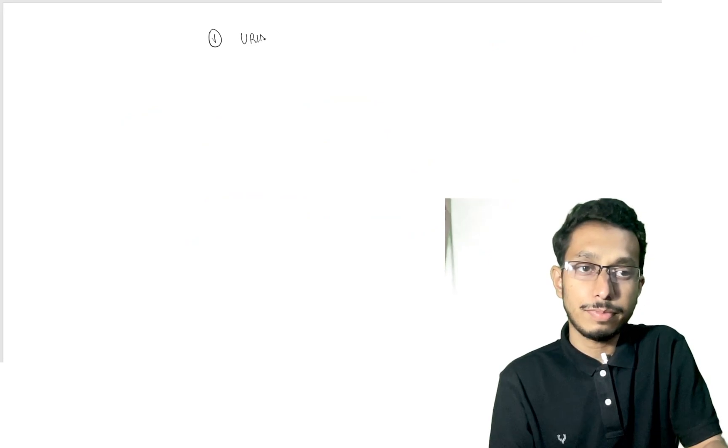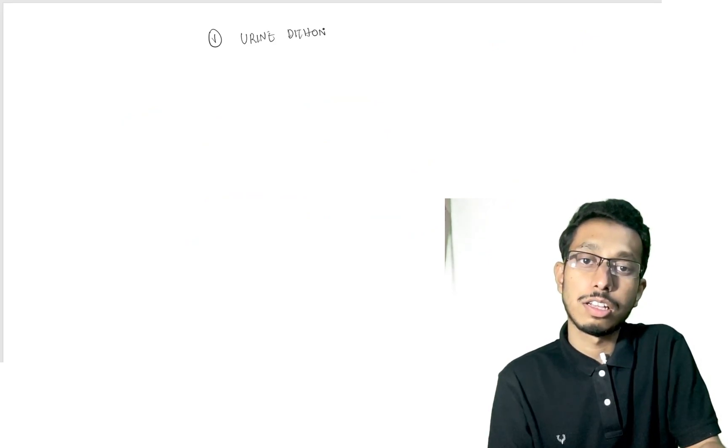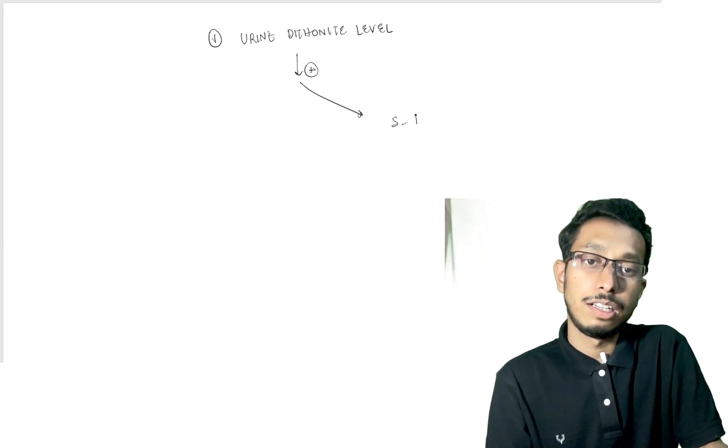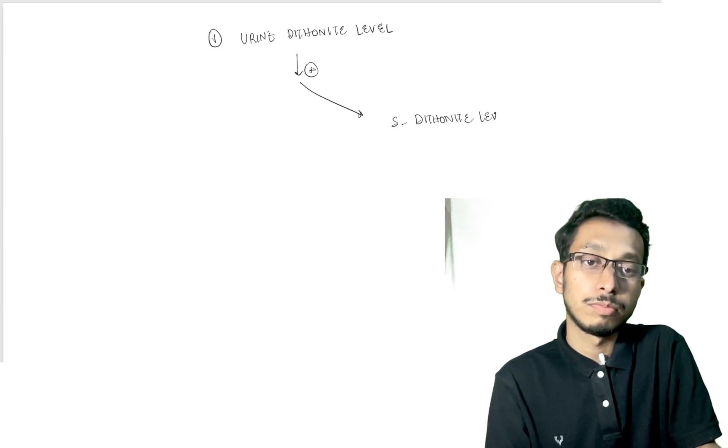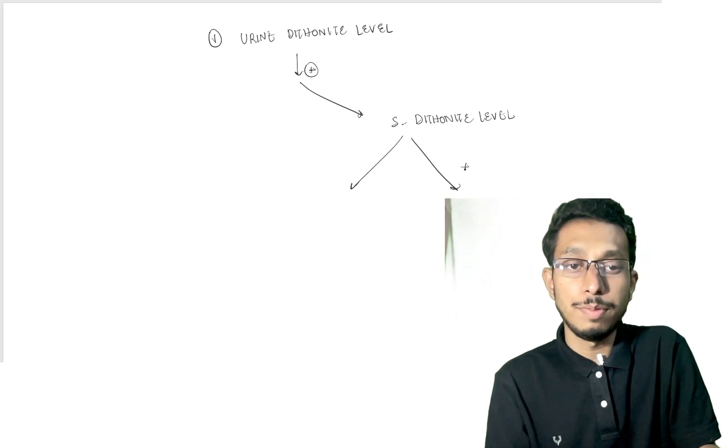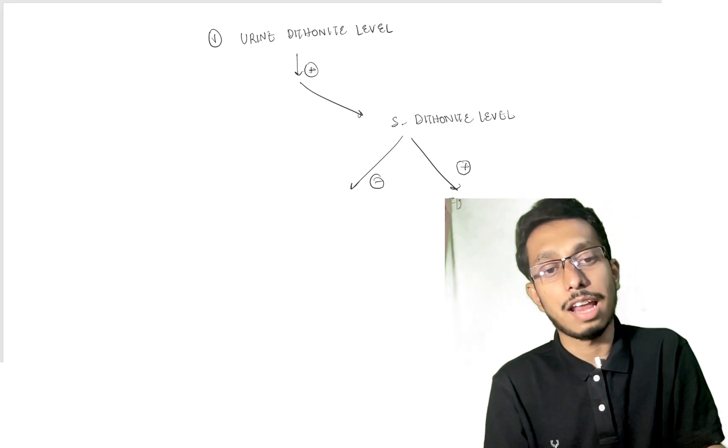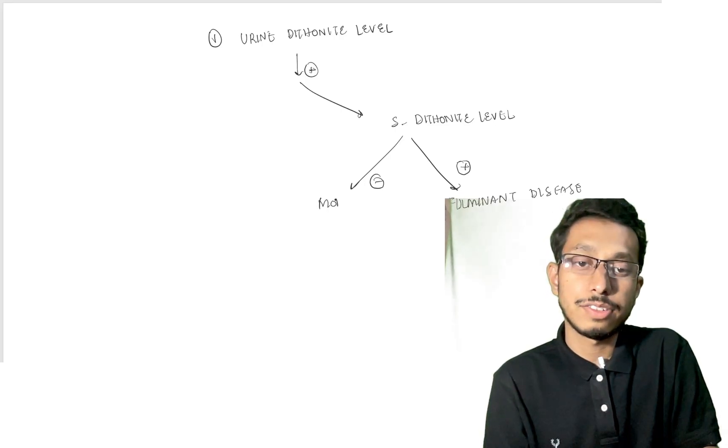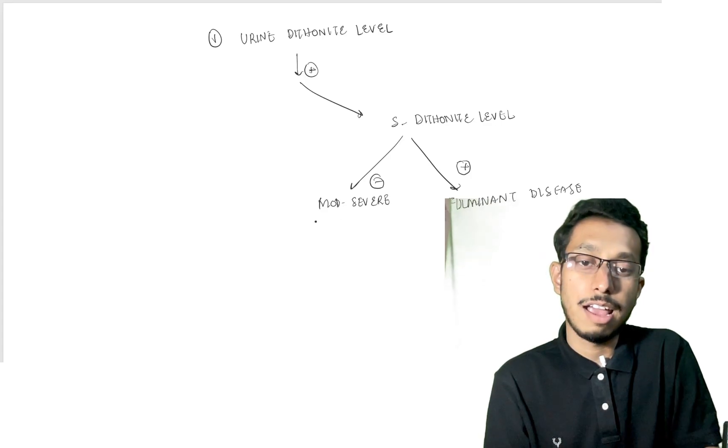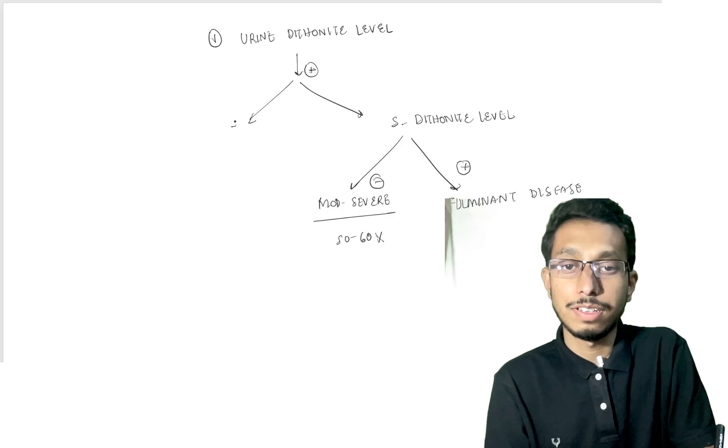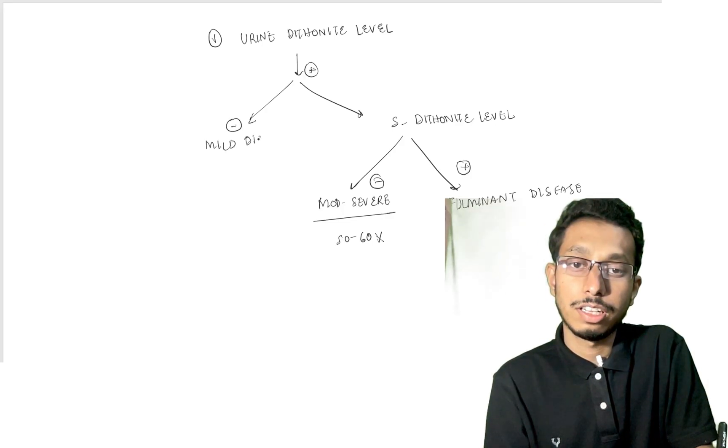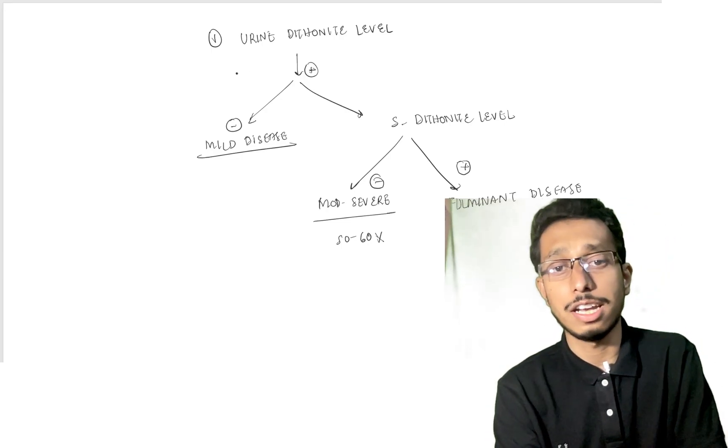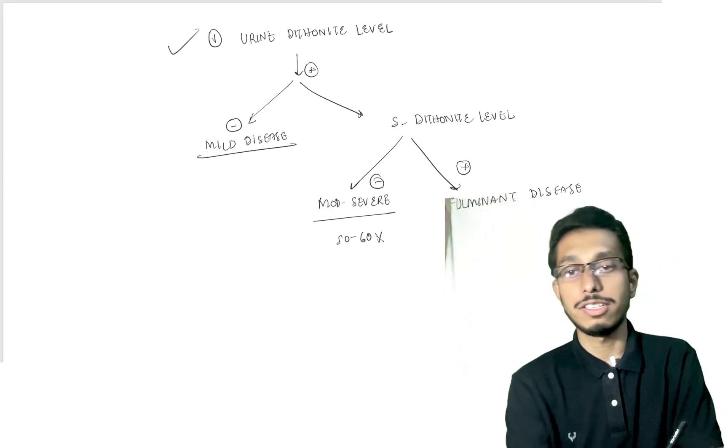The steps: first check urine dietonate level. If positive, check serum dietonate level. If serum is positive, it means fulminant disease with very high mortality. If serum is negative, it's moderate to severe disease with mortality around 50-60%. If urine dietonate is negative, it's mild disease with very good survival chances and very low mortality.